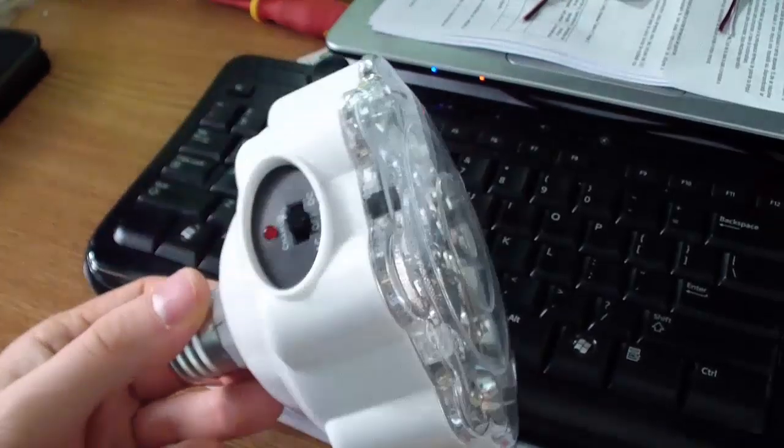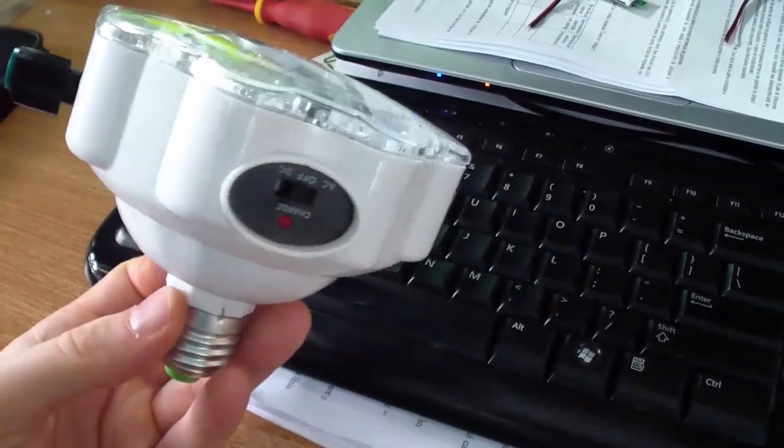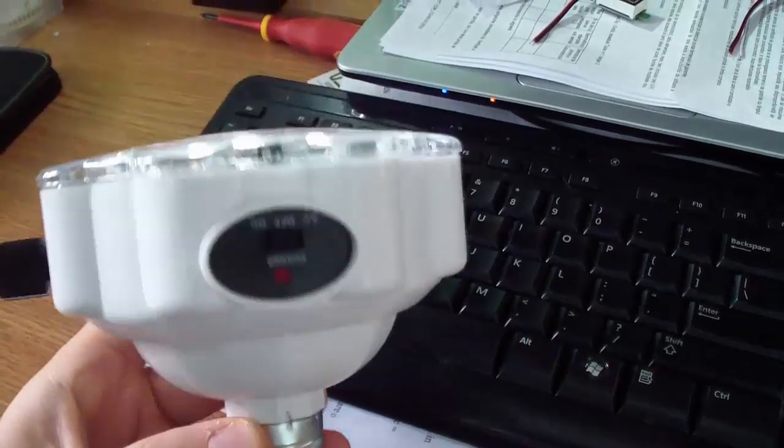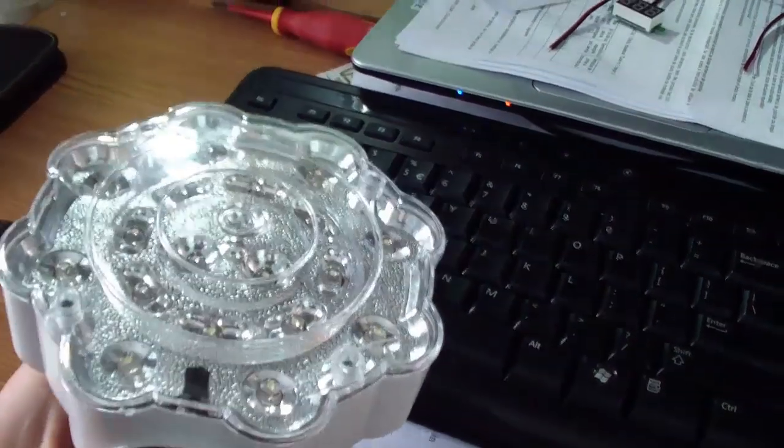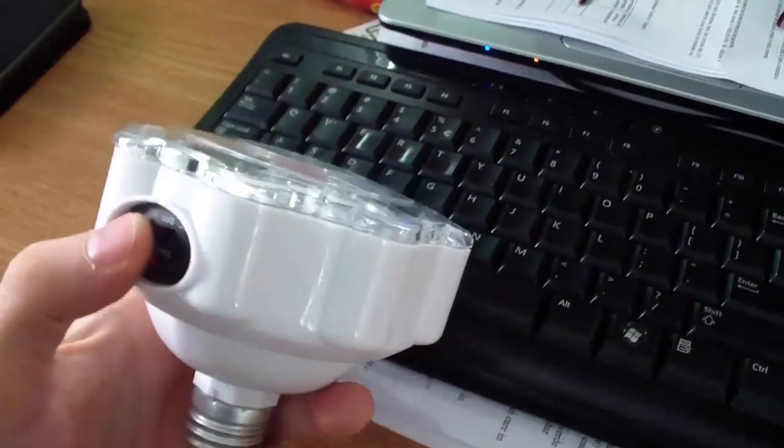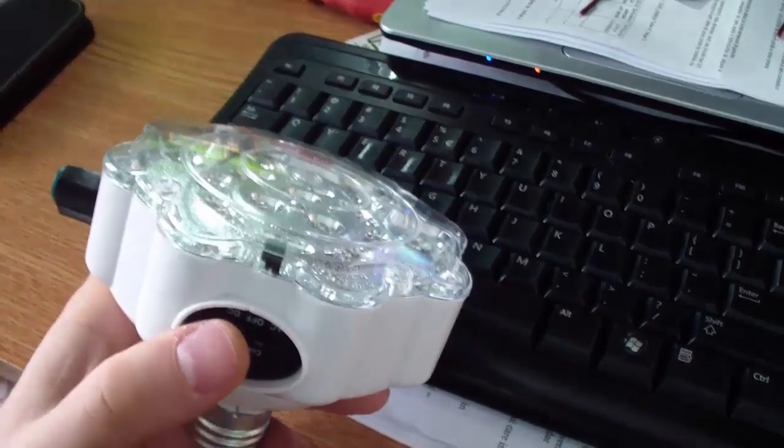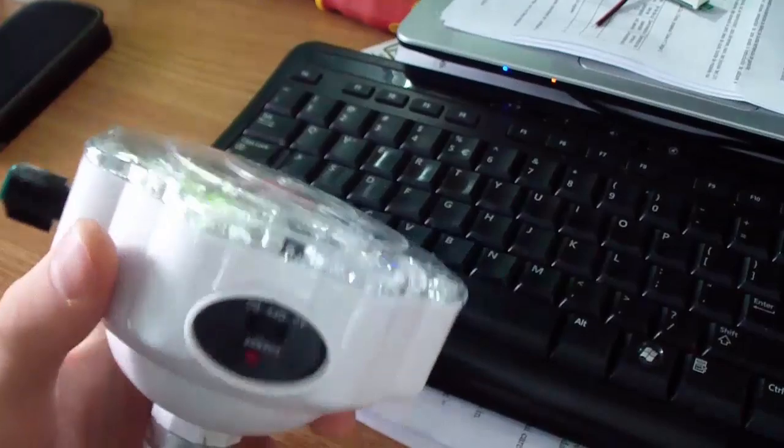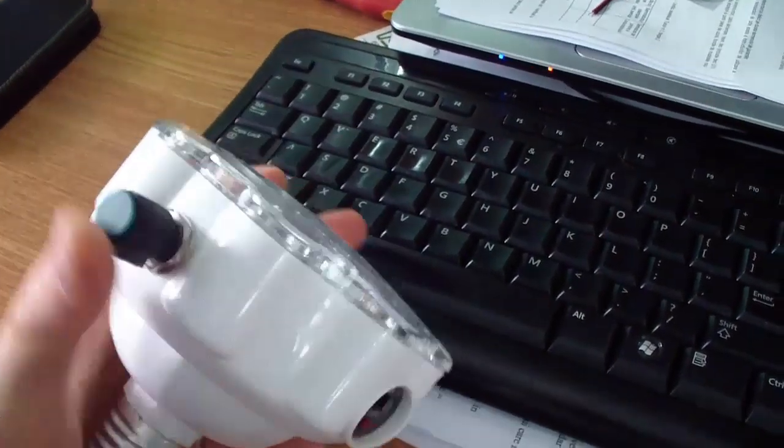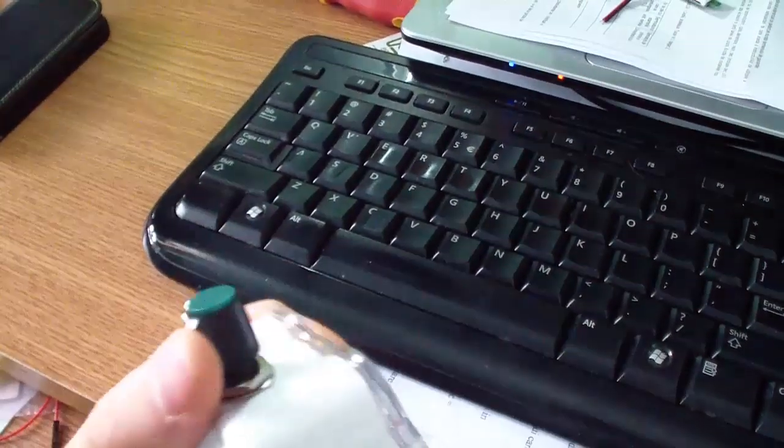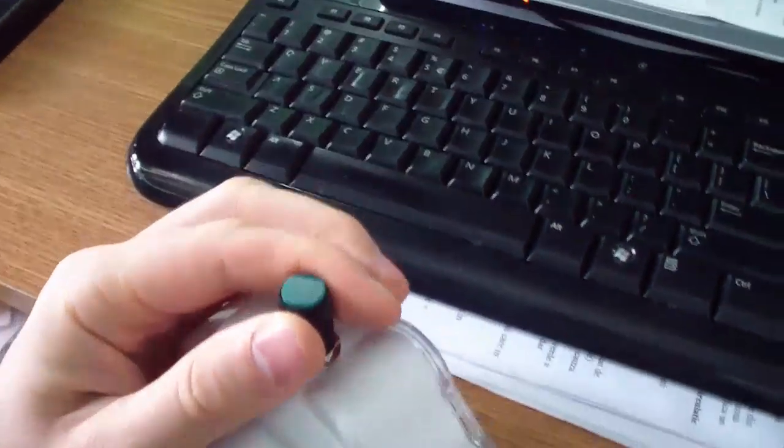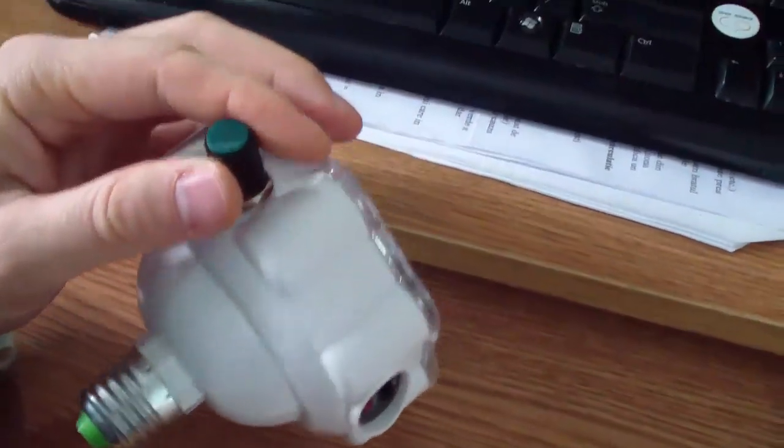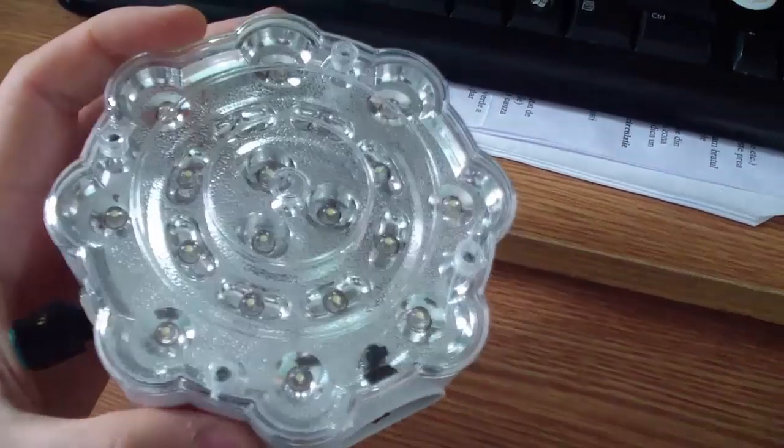Hi guys, Marian from electroschematics.com. Here is a Chinese LED lamp. It was and I think it is still very cheap. I had to modify it. I placed this potentiometer to allow the light to be dimmed.